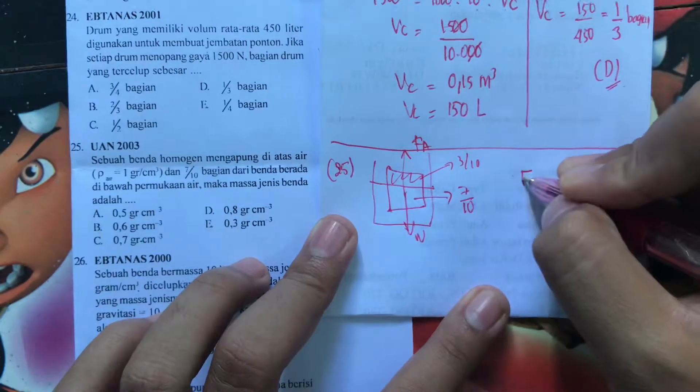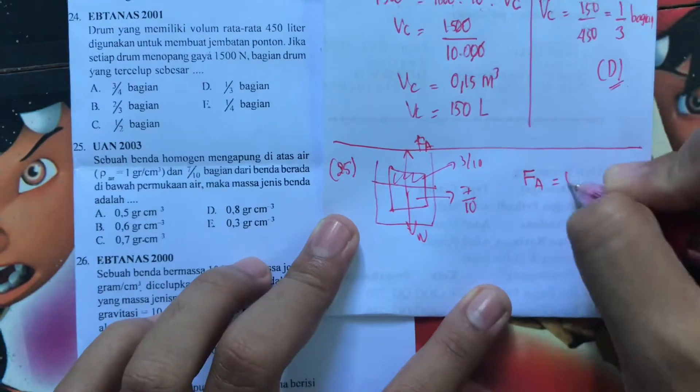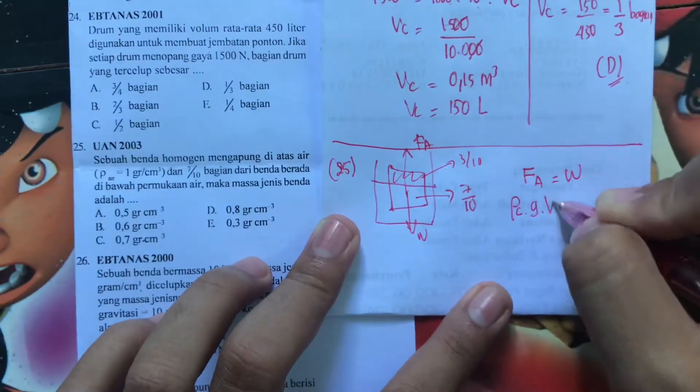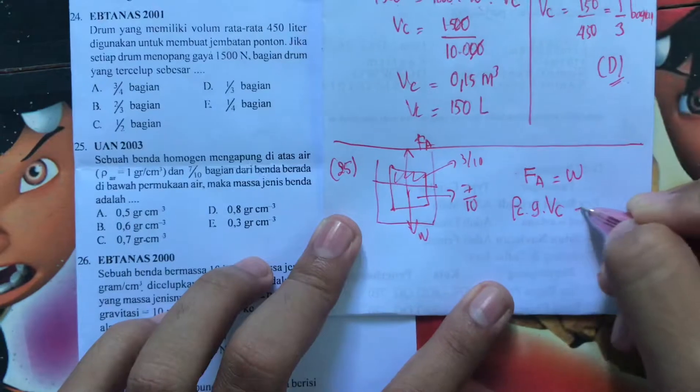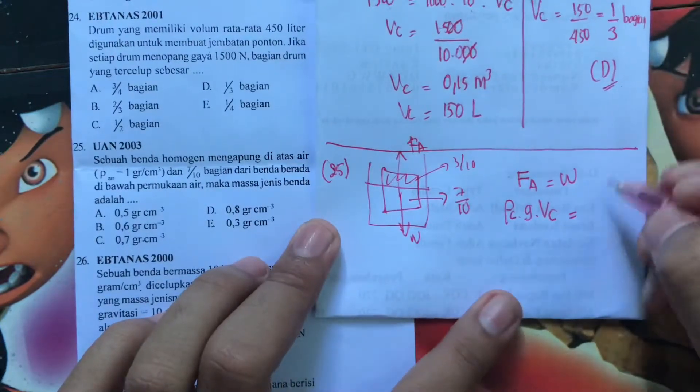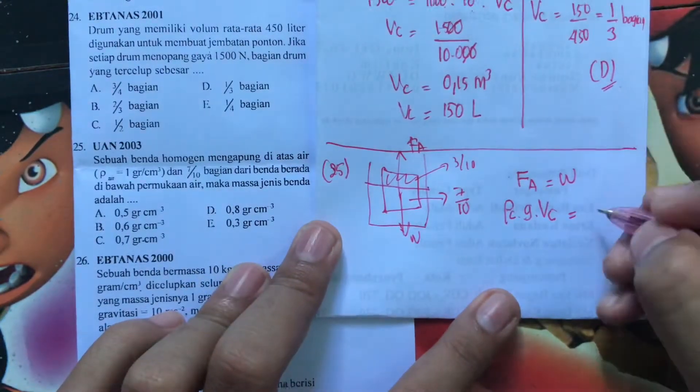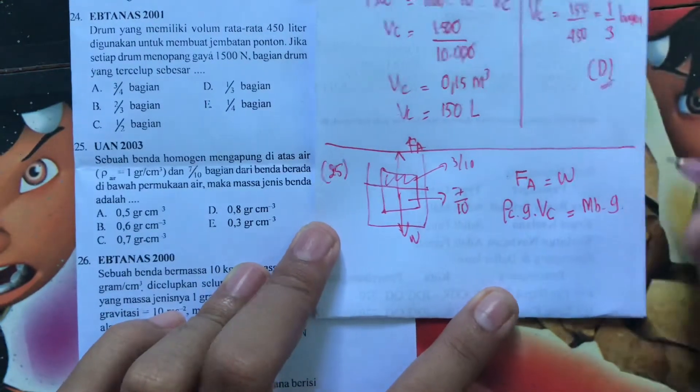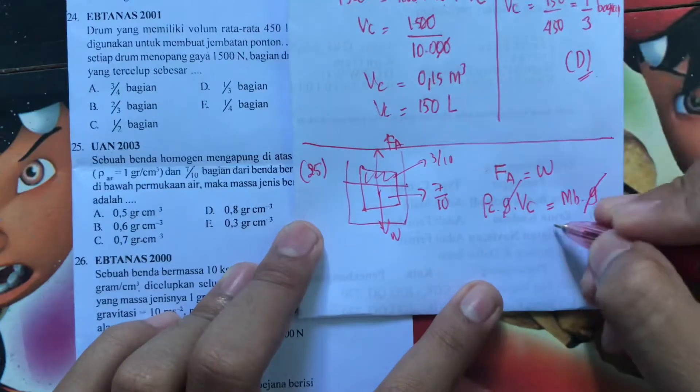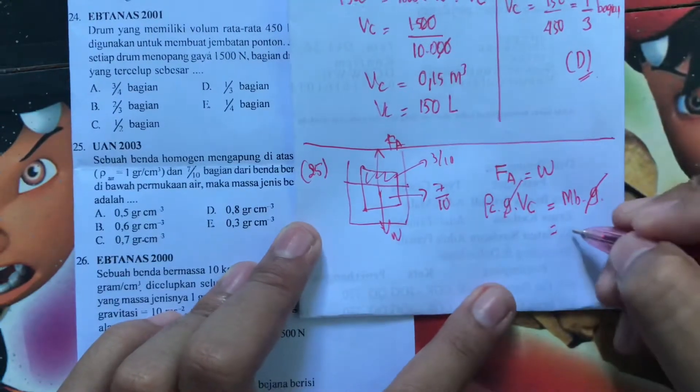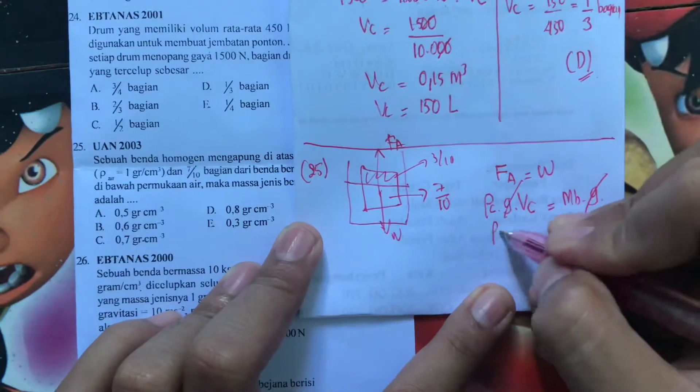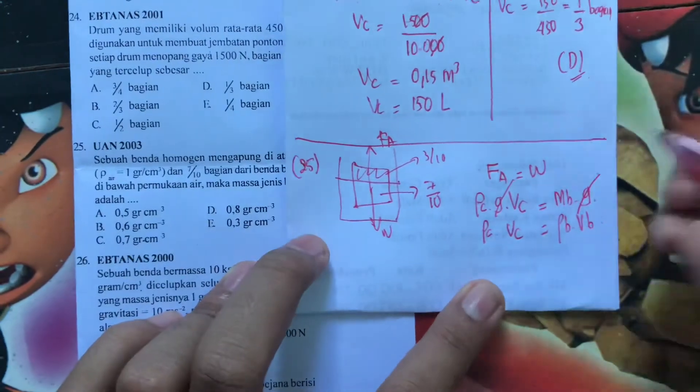Berarti kan kestimbangan gaya-gaya. Gaya-gayanya adalah FA sama dengan W. FA itu rho cairan gravitasi kali volume tercelup. Sama dengan W. W-nya itu adalah berat benda, berarti adalah masa benda kalikan gravitasi. Kita bisa coret nih gaya gravitasinya. Kita bisa jabarin juga. Masa benda itu berarti adalah rho benda kalikan volume benda. Ini rho cairan kalikan volume cairan.